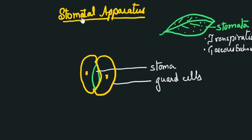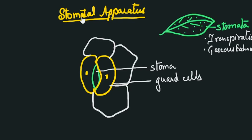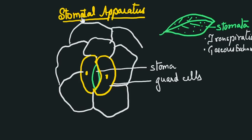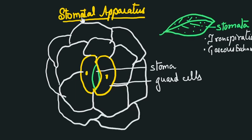Surrounding these guard cells are present large sized cells which are called subsidiary cells. These cells are large in size as they have all the gases which are exchanged through stomata, whether they are getting in or getting out. The stomatal apparatus together constitutes the stoma, guard cells, plus the subsidiary cells.